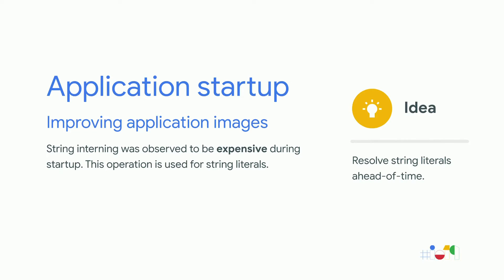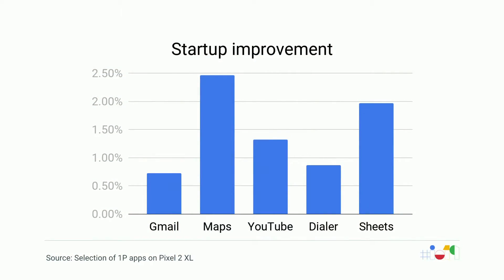The application image is generated by the compiler taking both the application APK and the profile as inputs, using the profile to know specifically what classes are loaded during startup, and including only those in the application image. This is done during installation if a profile from the cloud is present; otherwise, it's done in the background when the device is charging. We recently observed that string interning caused by string literals during application startup was taking a large amount of time, so we added an optimization to include commonly-used startup string literals in the application image. This yields around a 2.5% improvement on some applications, measured on a Pixel 2 XL.